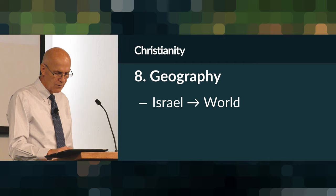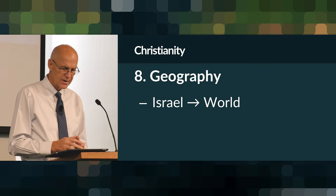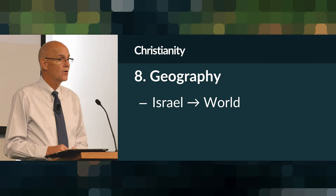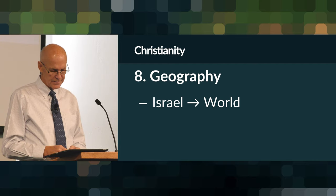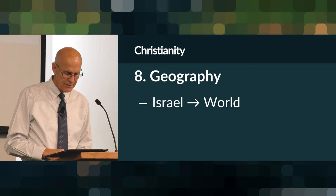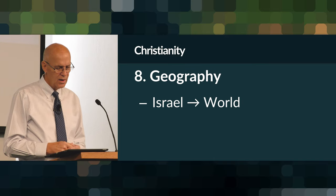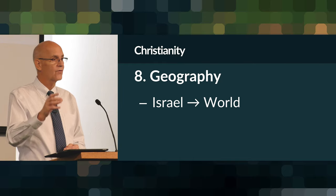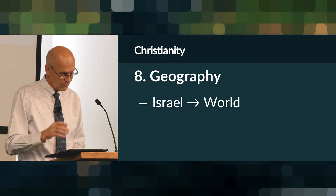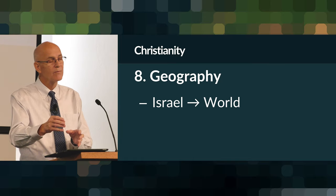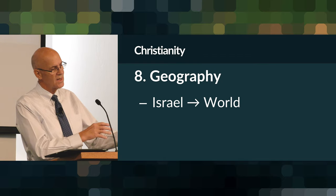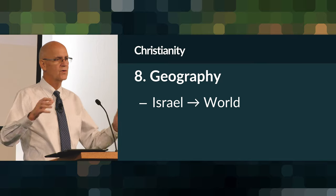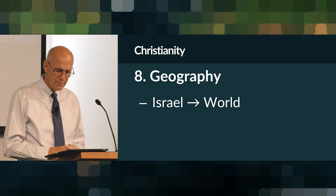Geography for Christianity is fairly simple — began in Israel but has spread throughout the world. The greatest concentration of Christians is in the United States, Europe, South America, and recently Africa. The country of Africa is very quickly becoming the dominant center of Christianity in the modern world. There was a time it was Europe, then the United States. Now Africa is becoming the dominant center as far as converts and the number of individuals who practice the faith.